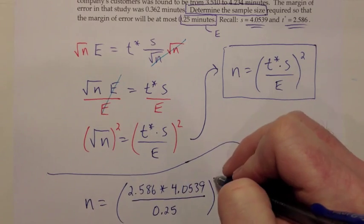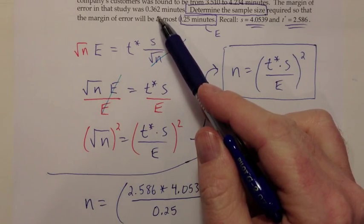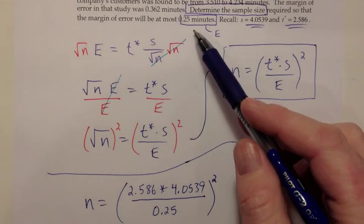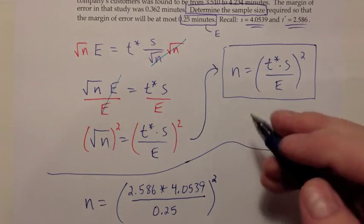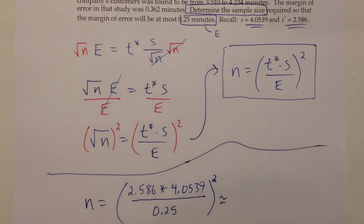That is the one place where you have to be really careful here. Sometimes people plug in the margin of error of 0.362, and that was the margin of error we had previously. You want to make sure you're plugging in the margin of error that we want right now. Then we'll go to the calculator and see how that comes out.